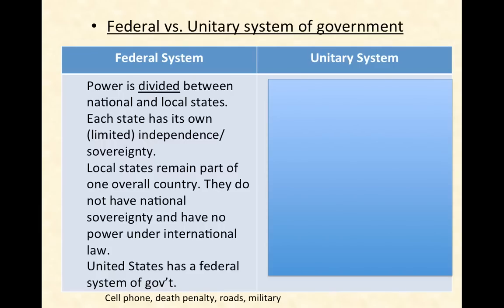Each of these 50 states has its own limited independence or sovereignty. Another word for sovereignty is independent. So for example, the state of Massachusetts has its own limited sovereignty, as does New York, California, and Texas. These local smaller states remain part of one overall country, and they do not have national sovereignty and they have no power under international law.